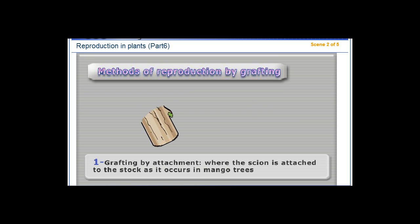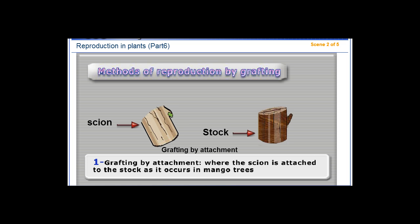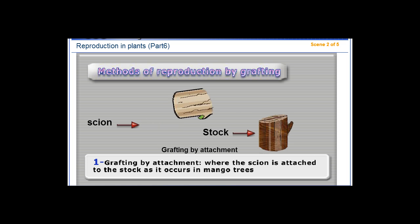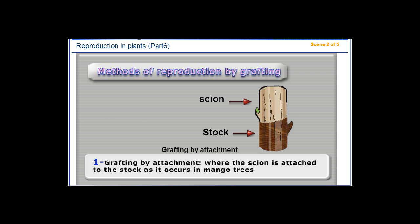Methods of reproduction by grafting. 1. Grafting by attachment: where the scion is attached to the stalk, as it occurs in mango trees.